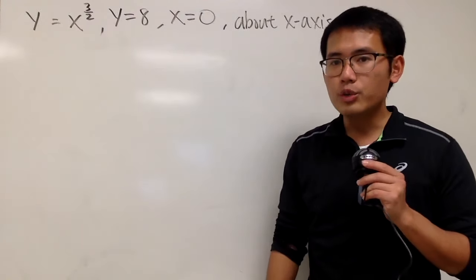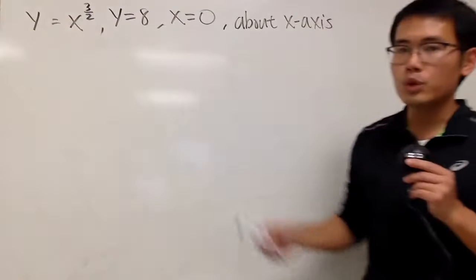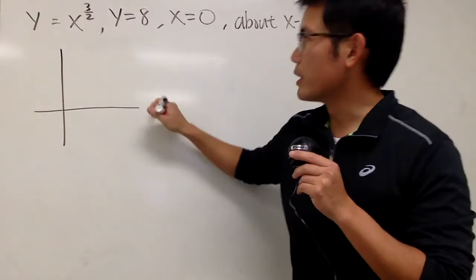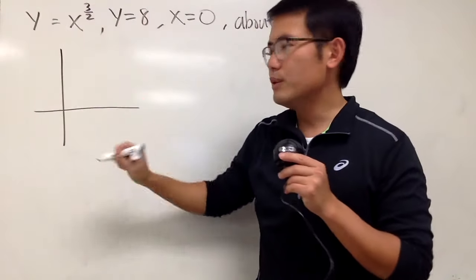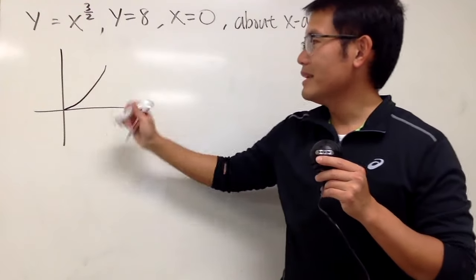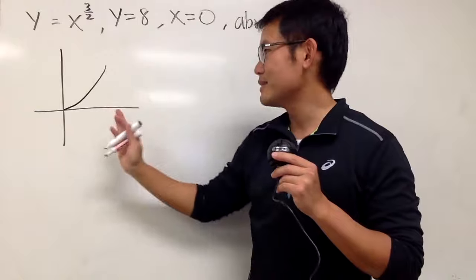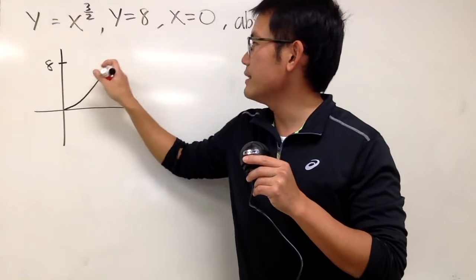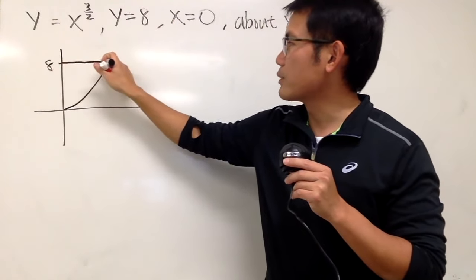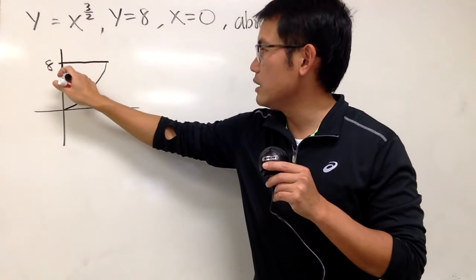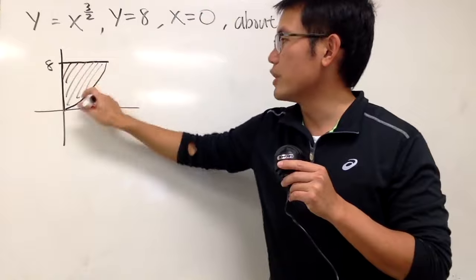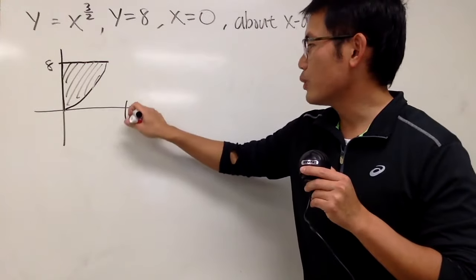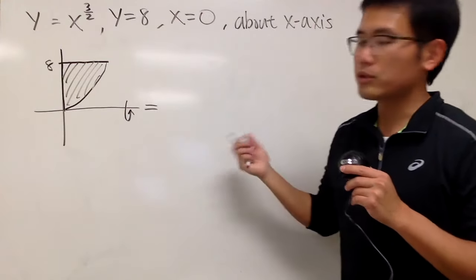We are going to find the volume generated by rotating the region bounded by these equations about the x-axis. Let's look at the picture of y = x^(3/2). It's not a parabola and not a line — it looks like this. We want y = 8, so we make a cut there. When x = 0, that's the y-axis. So we are talking about this region, and we take it and rotate about the x-axis.